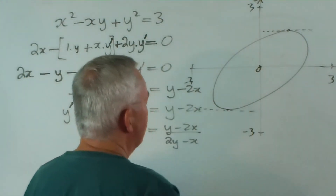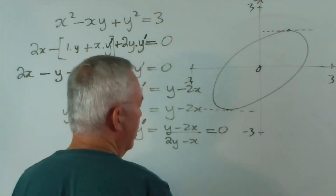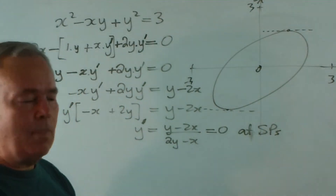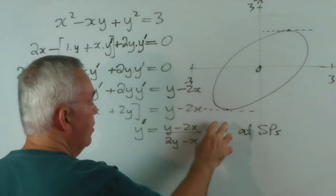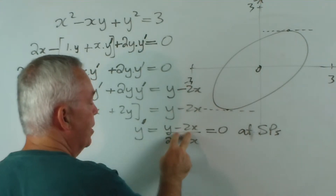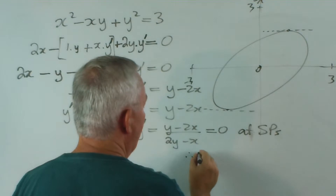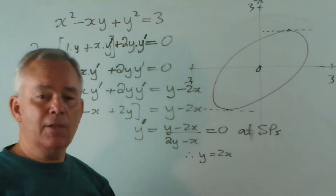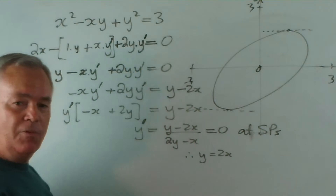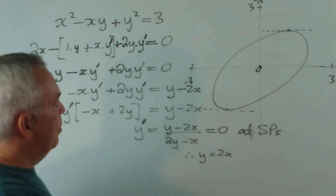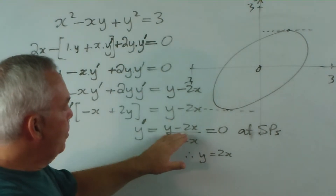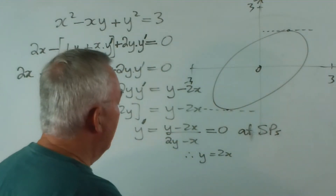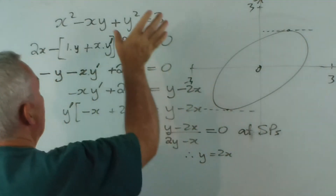Now, to find the maximum and minimum values, I would have to set this derivative equal to zero at stationary points. If the derivative equals zero, then all it means is the numerator equals zero. So therefore y must equal 2x. At this stage we have found the derivative implicitly. To solve the further problem that Dwayne Cooper proposed: if we want the derivative equal to zero, we can see that y minus 2x must be zero, so y must equal 2x.